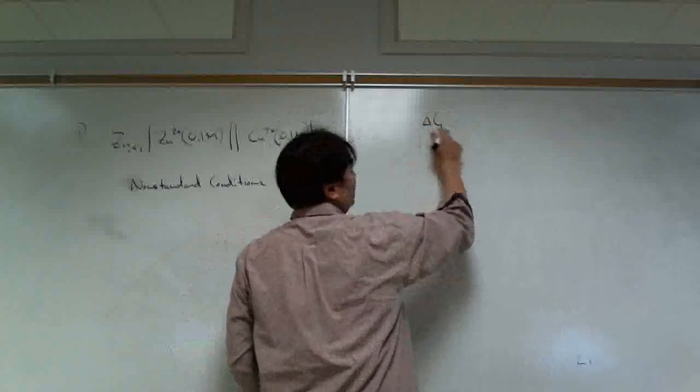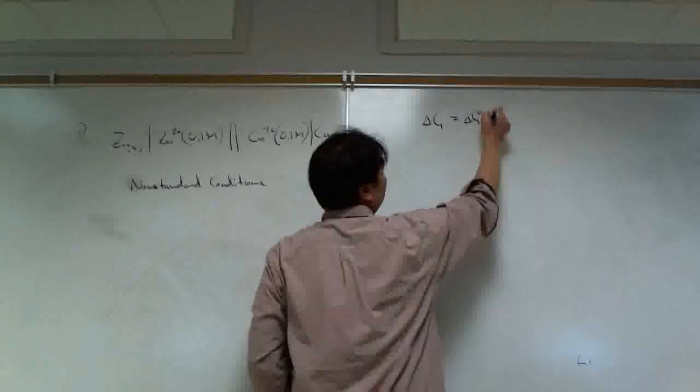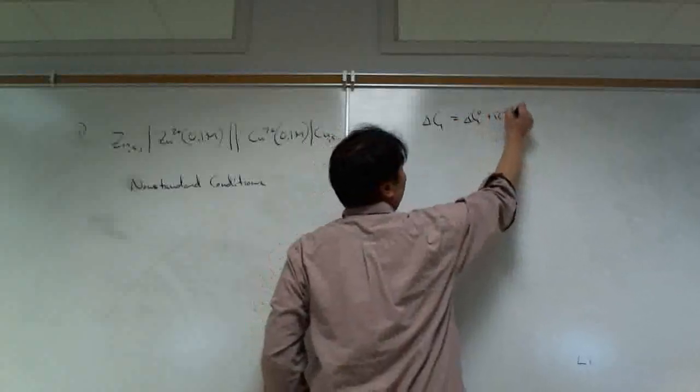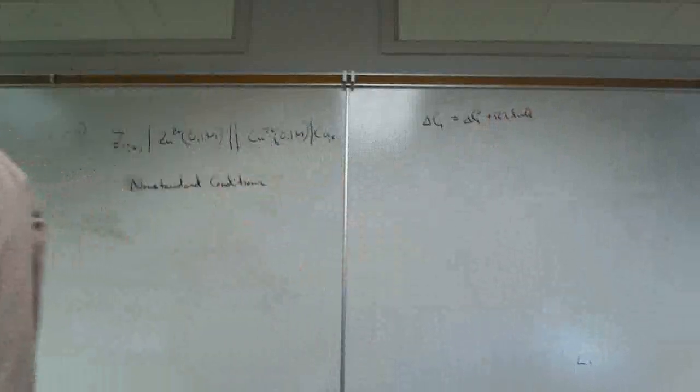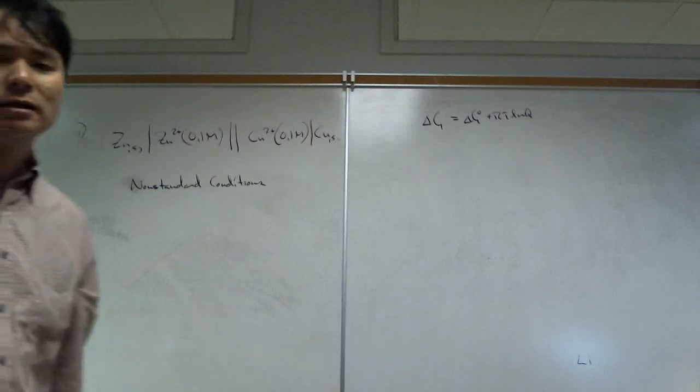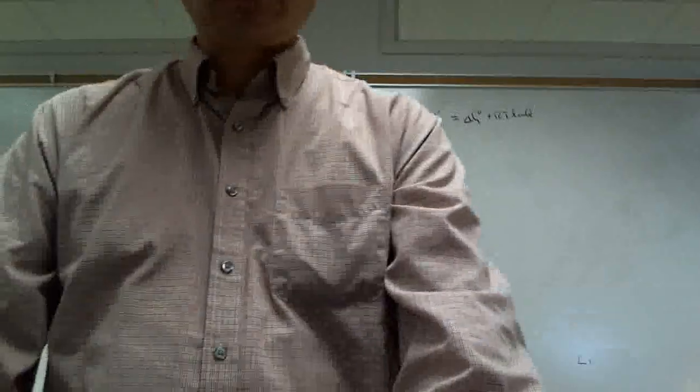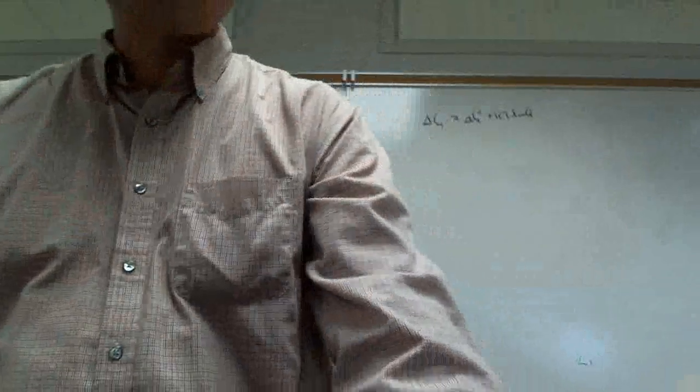So, we know delta G, under non-standard conditions, is equal to delta G under standard conditions plus RT LN of Q. Let's see. I still have some more to talk about since I'm a little bit behind. You want a break now? And then we'll talk after the break? Yeah, let's do that. We'll take a break. I was going to try to wrap it up, but it can take me at least 15 minutes.